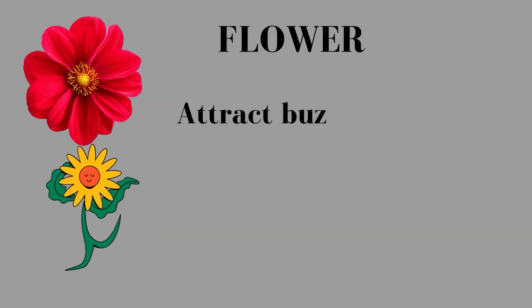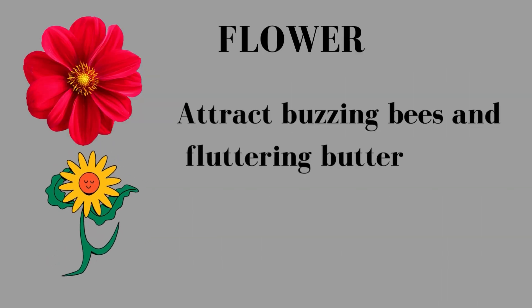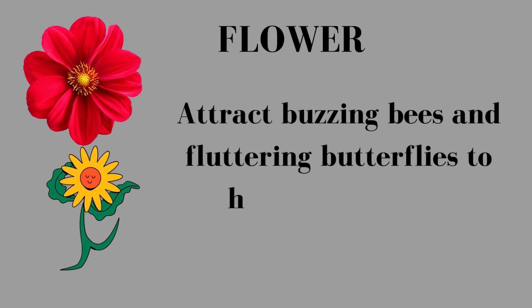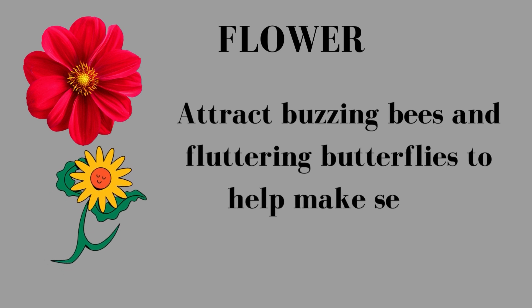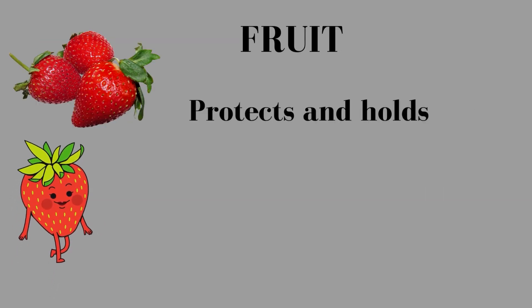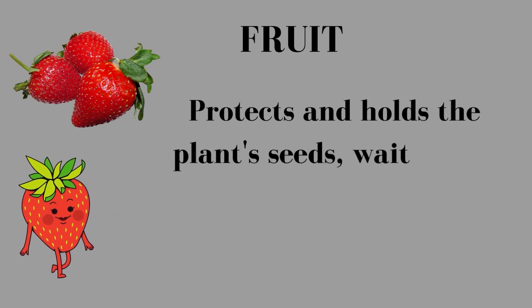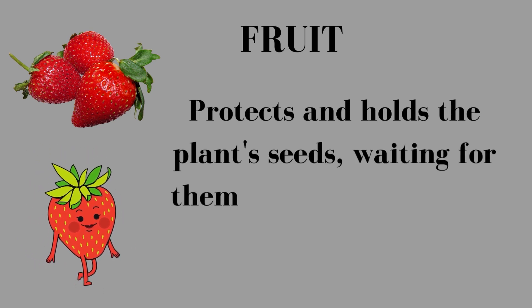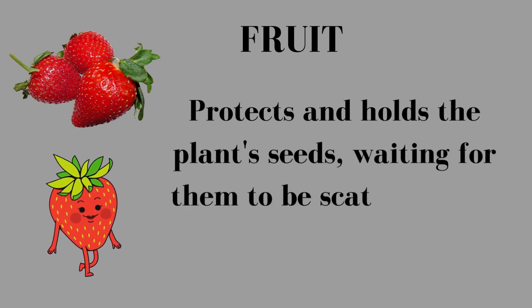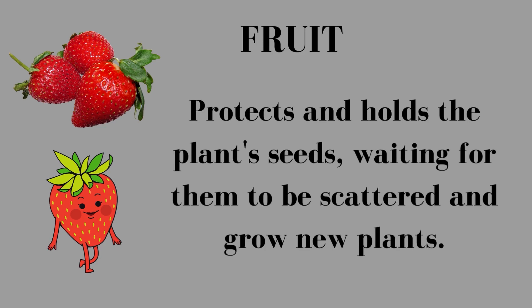Flower. Flowers attract buzzing bees and fluttering butterflies to help make seeds. Fruit protects and holds the plant's seeds, waiting for them to be scattered and grow new plants.